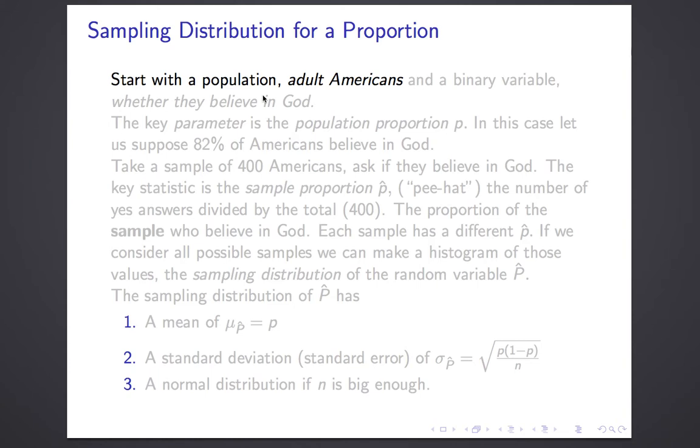Let's start thinking about a variable. In fact, let's think about a population and a binary variable. The population, let's say, is adult Americans, and the binary variable is whether or not you believe in God. There's really one significant parameter to consider there, which is the population proportion P. In this case, let's suppose that 82% of Americans believe in God.